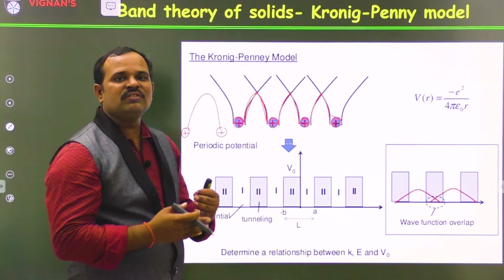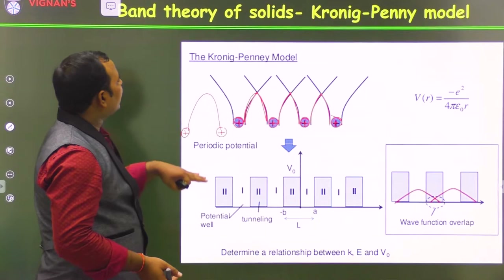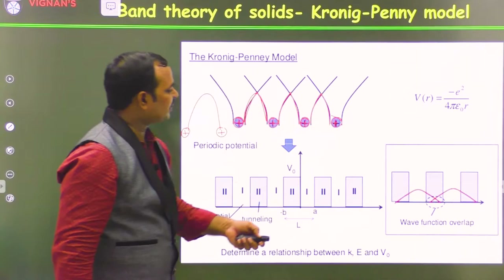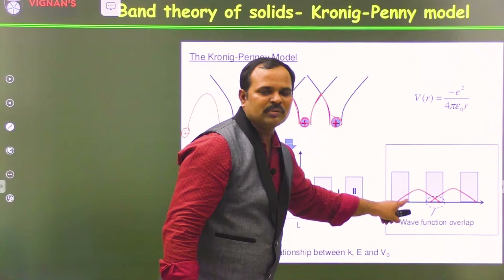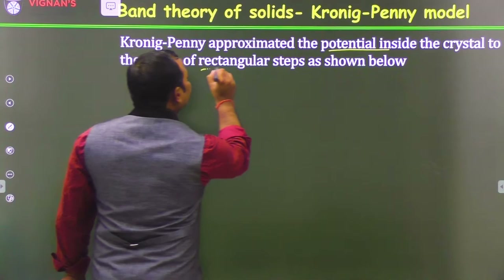In order to calculate the energy levels and wave function expression — that is, in order to solve the motion of the electron quantum mechanically — this model of potential is simply modified by Kronig-Penney. The potential is represented by rectangular steps. Kronig-Penney approximated this potential inside a crystal to the shape of rectangular steps.